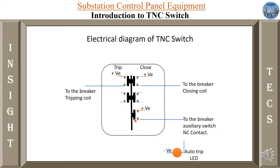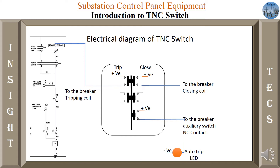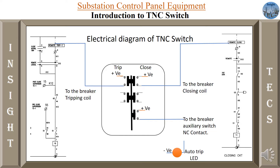Let us now see inside the breaker where these connections are made. Inside the circuit breaker, there is a tripping circuit where at terminal number 9 — remote trip 1 — we connect a wire towards the trip contact in the TNC switch. For the closing, we connect to the remote close in the closing circuit of the circuit breaker. That is how the trip and closed circuits are connected to the circuit breaker.